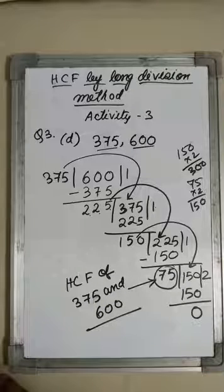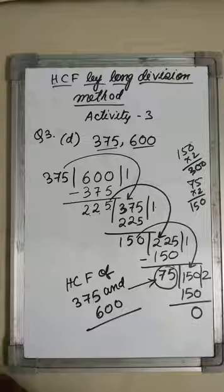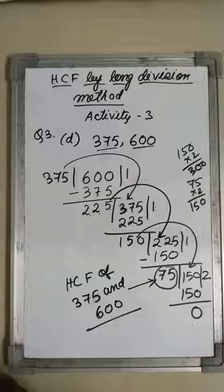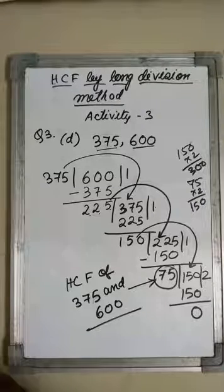So 75 is the HCF of 375 and 600. I hope you have understood this. It is very interesting actually, but it is a long process with lots of calculations. If you do one or two problems yourself it will be easier and you will understand much better.